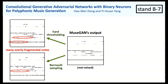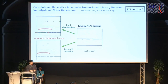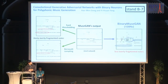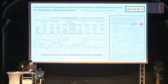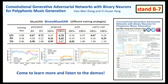Here are some qualitative results. In the middle, we show MuseScan's output, which is real-valued. If we apply naive binarization strategies such as hard thresholding and Bernoulli sampling, it produces a lot of overly fragmented notes. However, using binary MuseScan with deterministic binary neurons produces fewer overly fragmented notes. We also compare different training strategies and network architectures using several quantitative measures. If you're interested in our model and experiments, or want to listen to the demos, please come to stand B7. Thank you.